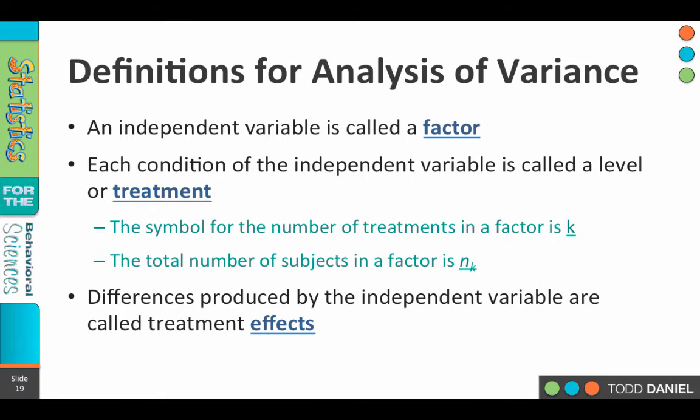The independent variable is going to be called a factor. If we're doing three independent variables, we might call that a three-factor model. Each condition of the independent variable is called a level or a treatment. The symbol for the number of treatments in a factor is k, and the total number of subjects in that factor is n sub k, or lowercase n. The total number of subjects in our whole experiment would be uppercase N.